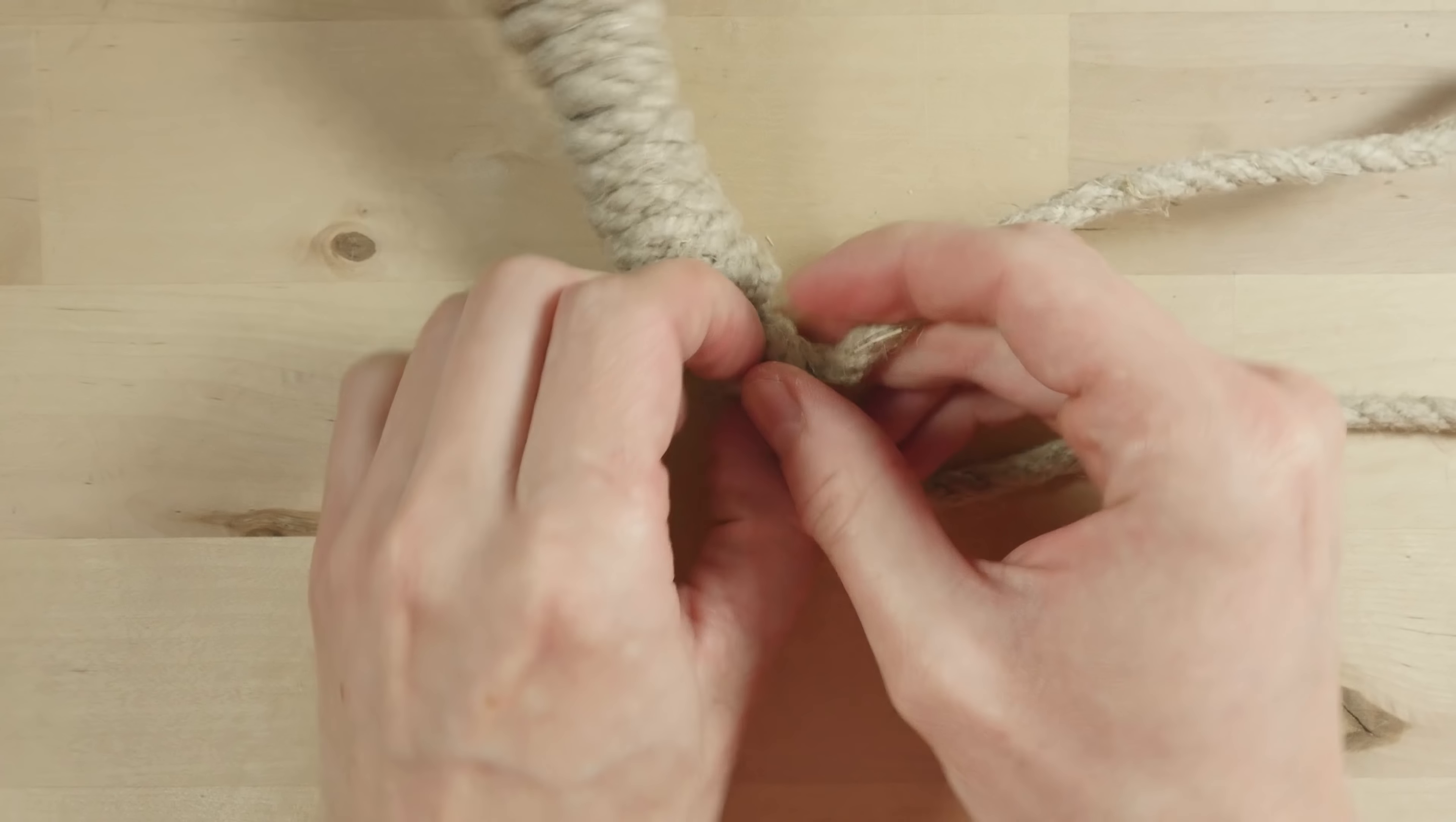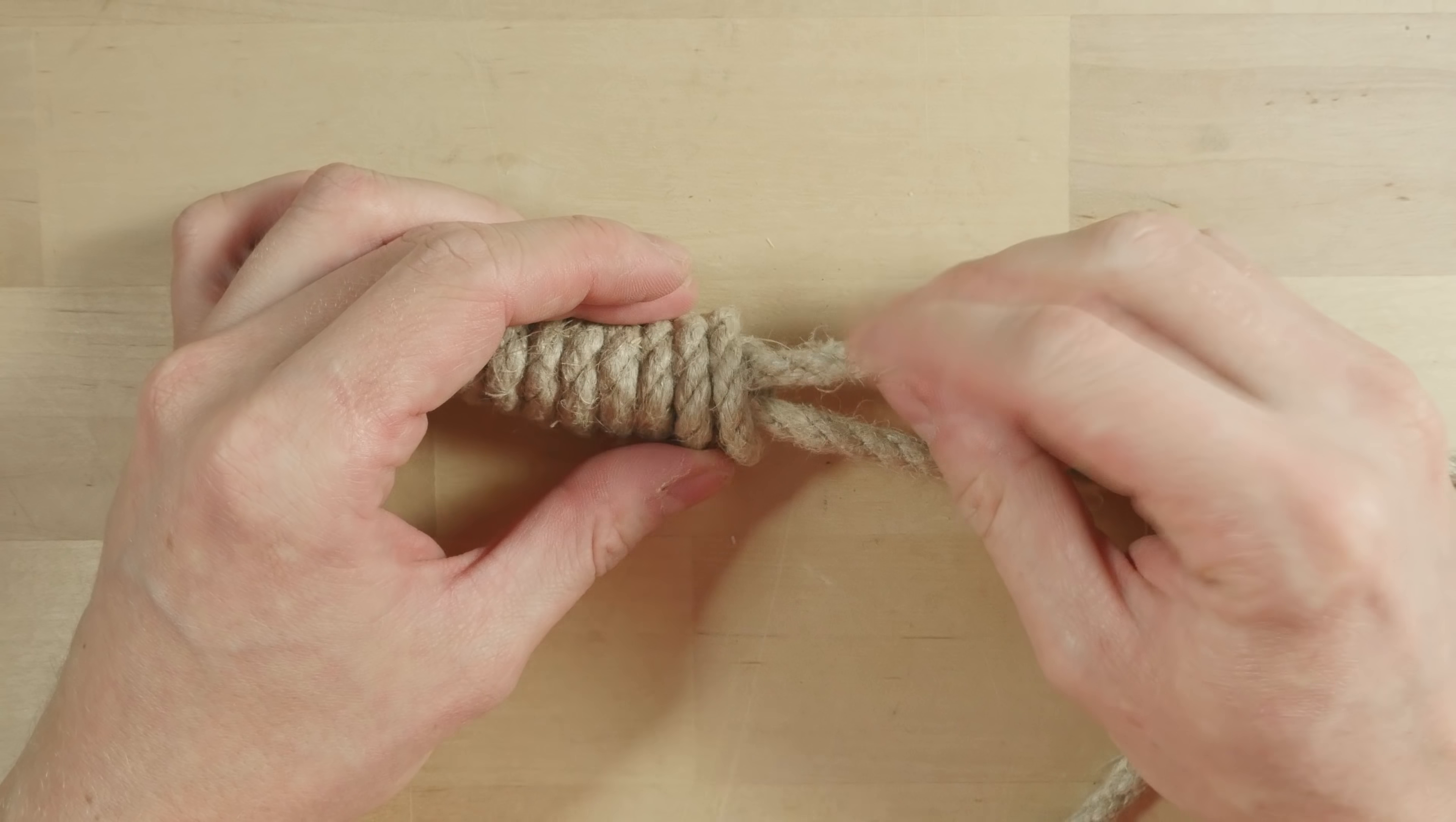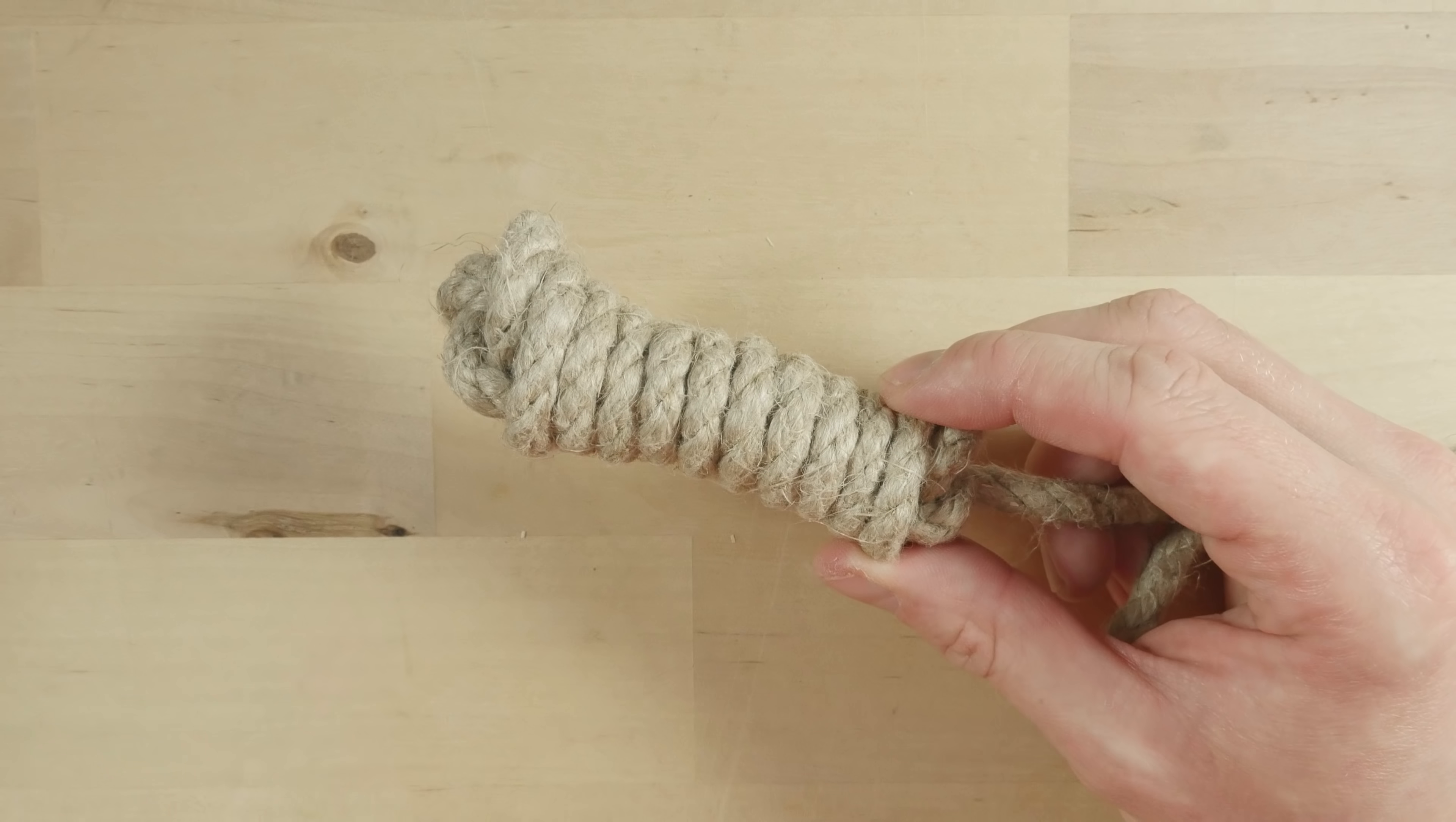Alternatively, instead of tying the overhand knot, you could splice this end, so the working end, into the standing end to secure it. So this is my preferred way for tying the heaving line knot.